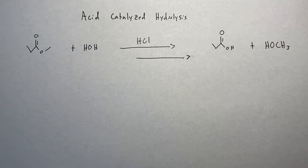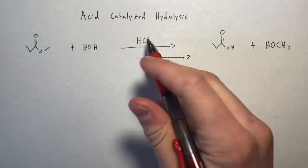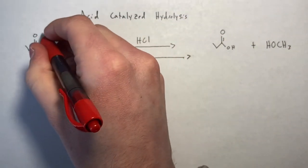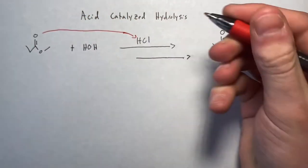So let's go ahead and show how the mechanism works. I'm going to do the arrows of the mechanism with red pen. So in our first step, the acid will come into play, and this oxygen will just deprotonate the HCl.